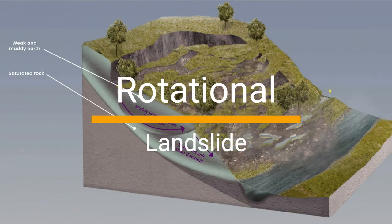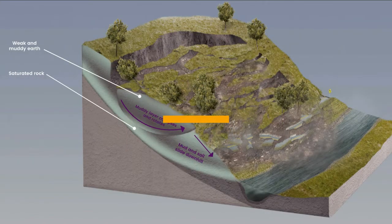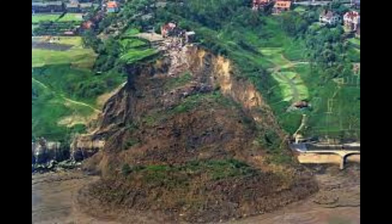A rotational landslide, also known as a slump, is a type of landslide that occurs on steep slopes when a mass of soil or rock moves downward and outward along a curved surface. It is often triggered by heavy rainfall, snowmelt, or other factors that increase the weight and water content of the soil.